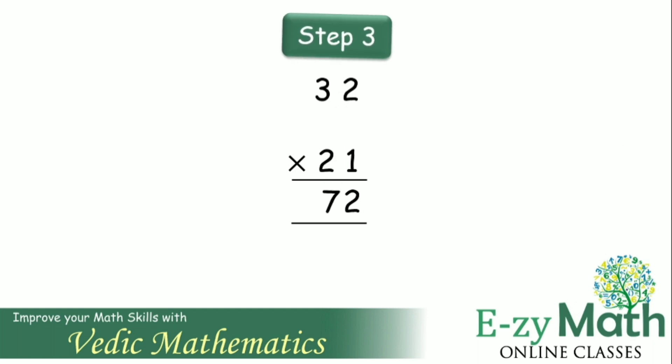The third as well as the final step is obtaining the hundreds digit of the product. To obtain the hundreds digit, multiply the tens digits together. That is 3 into 2 gives 6. Therefore, the product is 672.